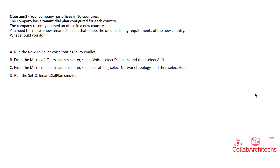We have four options. Option A: Run the New-CS Online Voice Routing Policy command. Option B: From the Microsoft Teams admin center, select Voice, select Dial Plan, and then select Add. Option C: From the Microsoft Teams admin center, select Locations, select Network Topology, and then select Add. Option D: Run the Set-CS Tenant Dial Plan command.